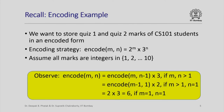Let us go back to the encoding example that we have been studying in the last few lectures. We want to sort quiz 1 and quiz 2 marks of CS101 students but in an encoded form. The encoding is given by encode(m, n) = 2 raised to m times 3 raised to n.